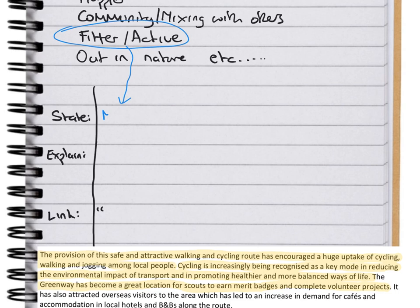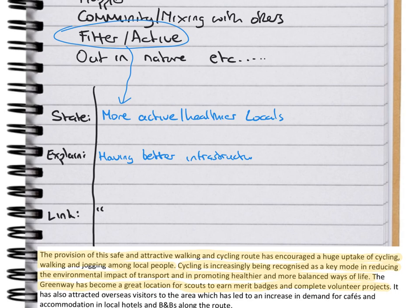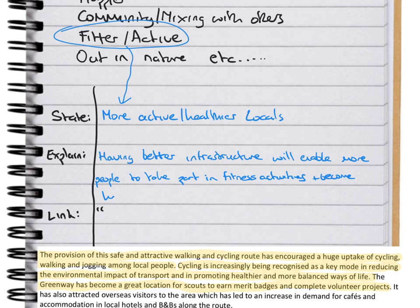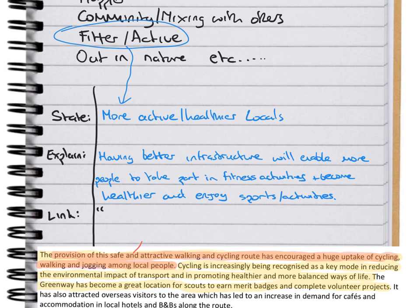We're going to go with 'fitter or more active' as the statement. Make sure you're not just saying 'fitness' — say something it does, like 'more active' or 'healthier locals.' That's our statement. Then we explain or develop it: having better infrastructure will enable or allow more people to get active than before, or provide a safe place for people to get active and take part. Essentially the Celtic Greenway is going to encourage, enable, and allow for more participation.